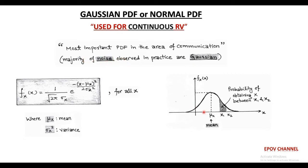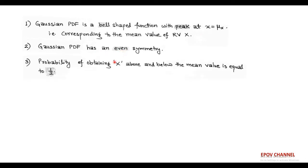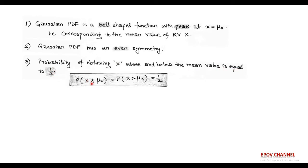Next, we summarize all the characteristics of Gaussian PDF. First, the Gaussian PDF is a bell-shaped function with peak value corresponding to the mean value mu. Next, the Gaussian PDF shows even symmetry, so that the probability of obtaining X above and below the mean value is just half. So, the probability of observing X less than or equal to mu equals the probability of observing X greater than mu, and its value is one-half.